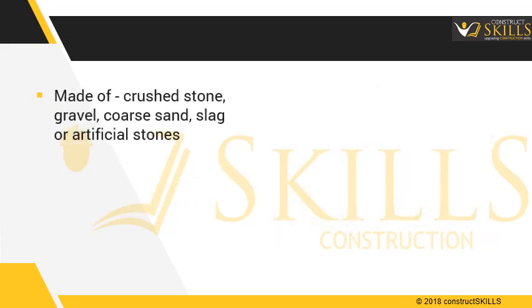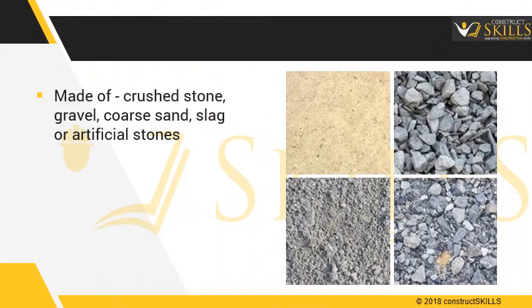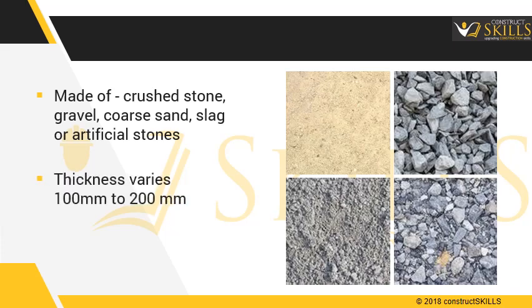Materials used for the GSB layer are crushed stone aggregates, gravel, coarse sand, crushed slag, or artificial soft aggregates. The thickness should not be less than 100 mm, with a maximum of 200 mm when compacted.